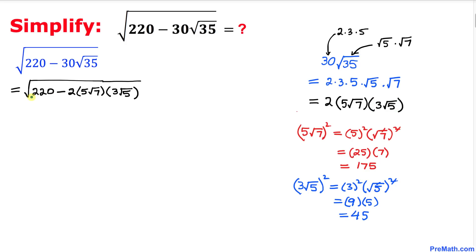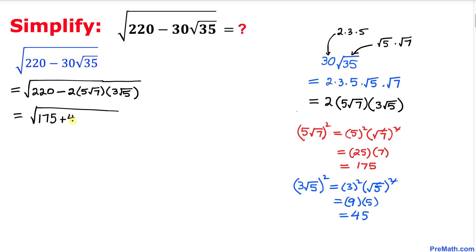Now let's focus on 220. Isn't 220 the same as 175 plus 45? So therefore we can write 220 as 175 plus 45, minus 2 times 5 times square root of 7 times 3 times square root of 5.